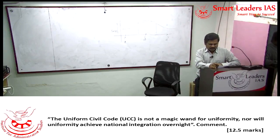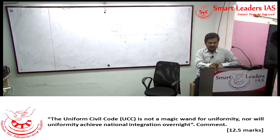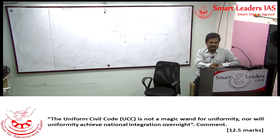Uniform civil code is not a magic wand for uniformity, nor will uniformity achieve national integration overnight. Regarding Article 44 of the Constitution, it is the endeavor of the state to enact a Uniform Civil Code. There are two reasons: one is uniformity or equality within, which speaks about gender equality; and the second is equality without, which speaks about inter-religious equality.